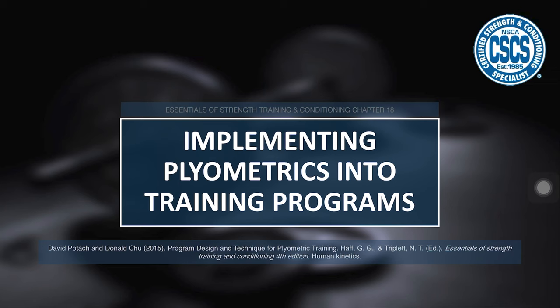This information comes from chapter 18 from the Essentials of Strength Training and Conditioning put out by the NSCA. In the first video we talked about both the neurophysiological and the mechanical models of plyometrics in order to describe how they increase force production and the rate of force production in athletic movements. In this video we'll be talking about how to incorporate plyometrics into a training program. This comes from chapter 18, which was written by David Potak and Donald Chu.